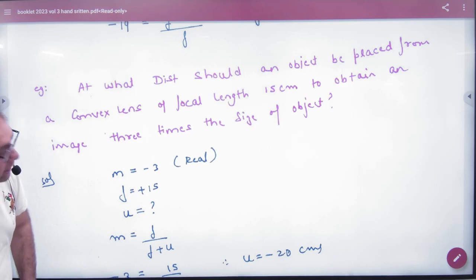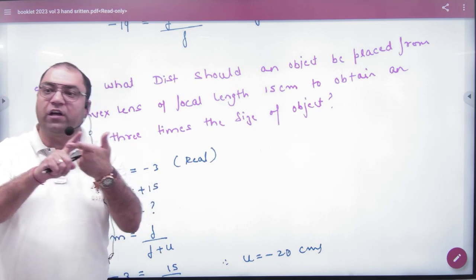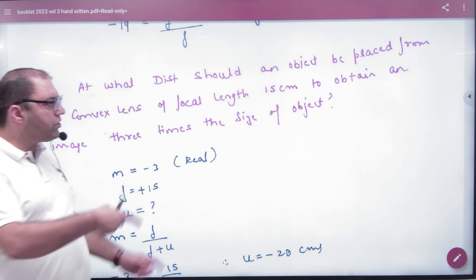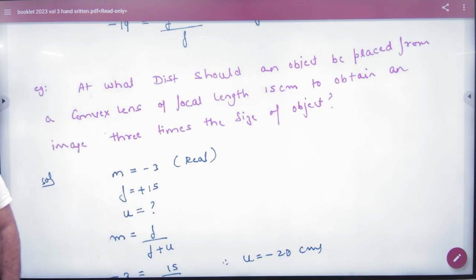Next question: at what distance should an object be placed from a convex lens with focal length 15 cm to obtain an image 3 times the size of the object? Magnification is 3. Tell me, is this real or virtual? 3 times magnification - real or virtual? Virtual can be big, real can also be big. He doesn't say positive or negative 3, just 3 times bigger. There are 2 cases in convex lens: real and virtual.